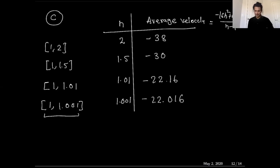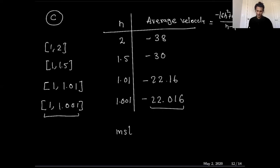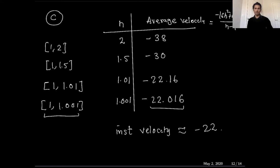After plugging in all values: h=2 gives -38; h=1.5 gives -30; h=1.01 gives -22.16; h=1.001 gives approximately -22.02. These numbers are approaching -22, and the interval is really, really close to the point. So we can conclude the instantaneous velocity is approximately equal to minus 22.